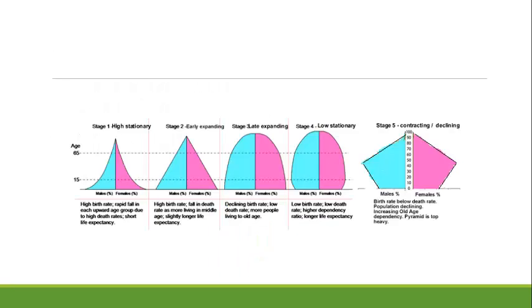These five graphs shown here are called population pyramids, and we can see their shape changes depending on where a country is in the stages of demographic transition. Each stage has its own distinct shape.